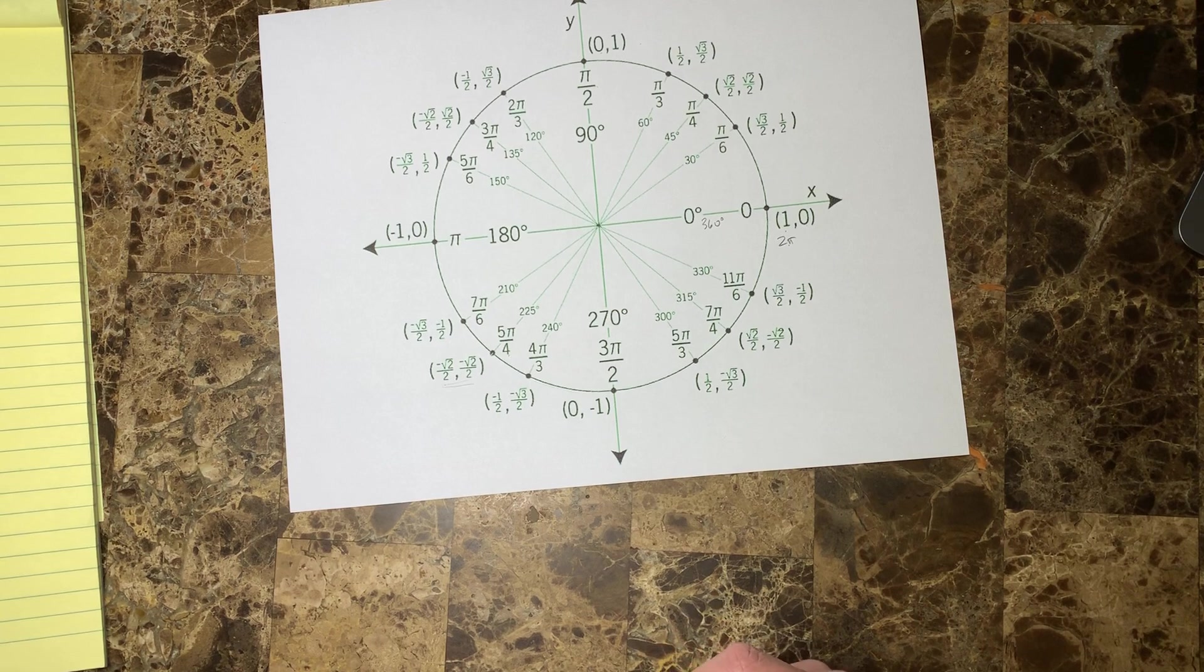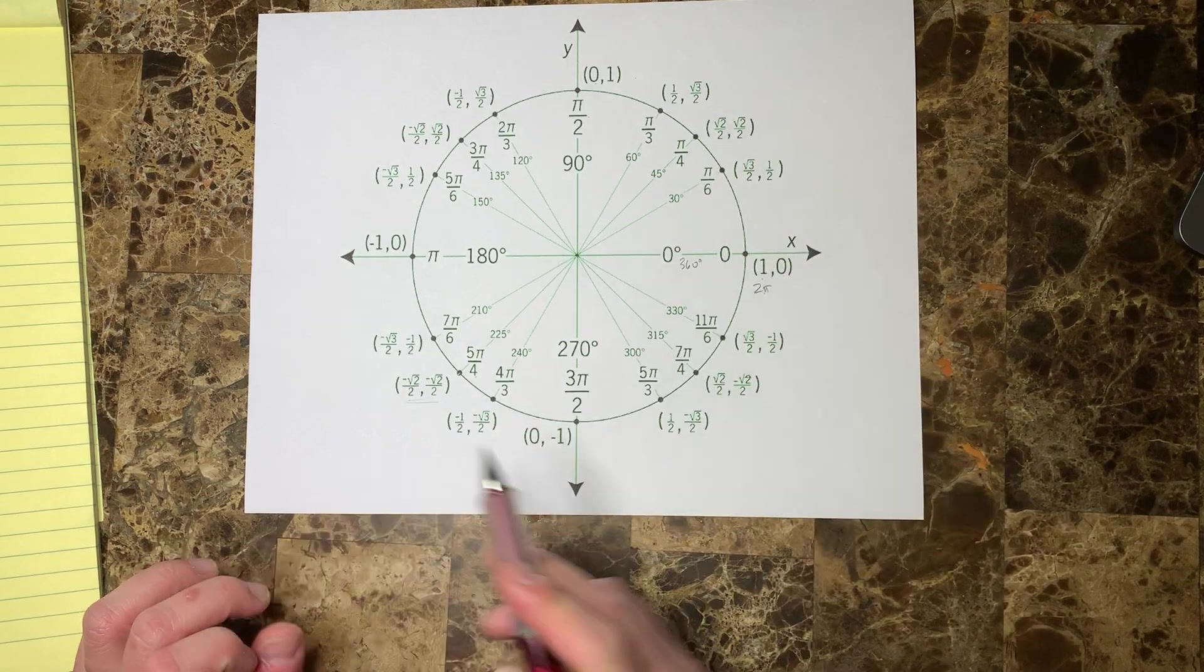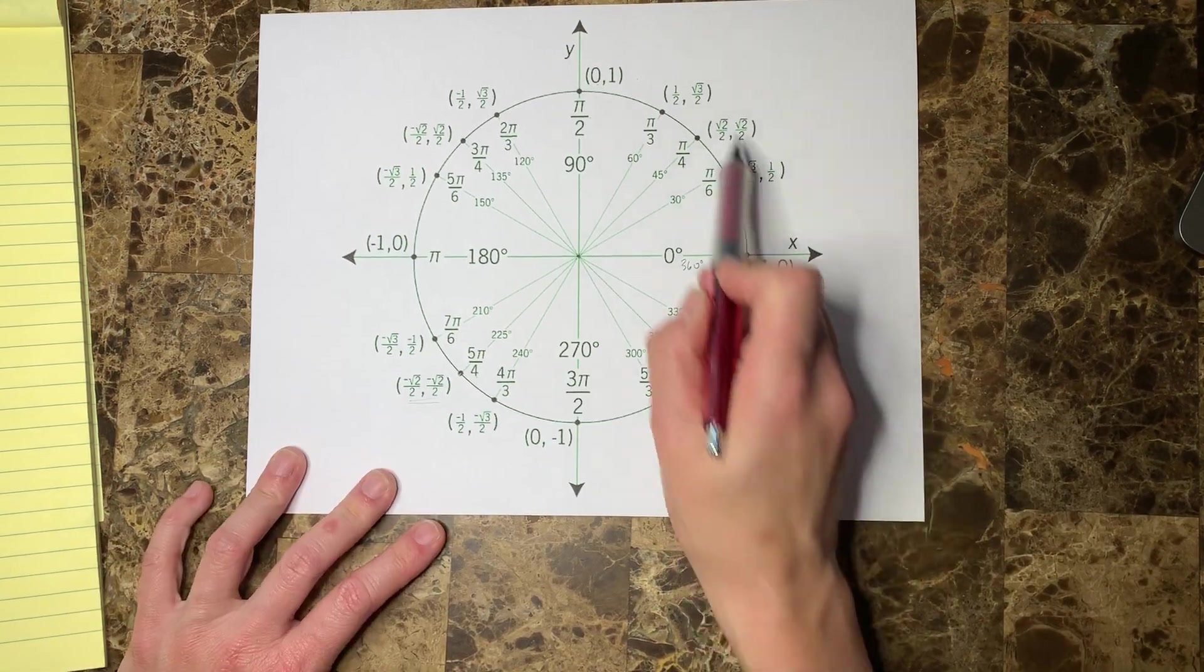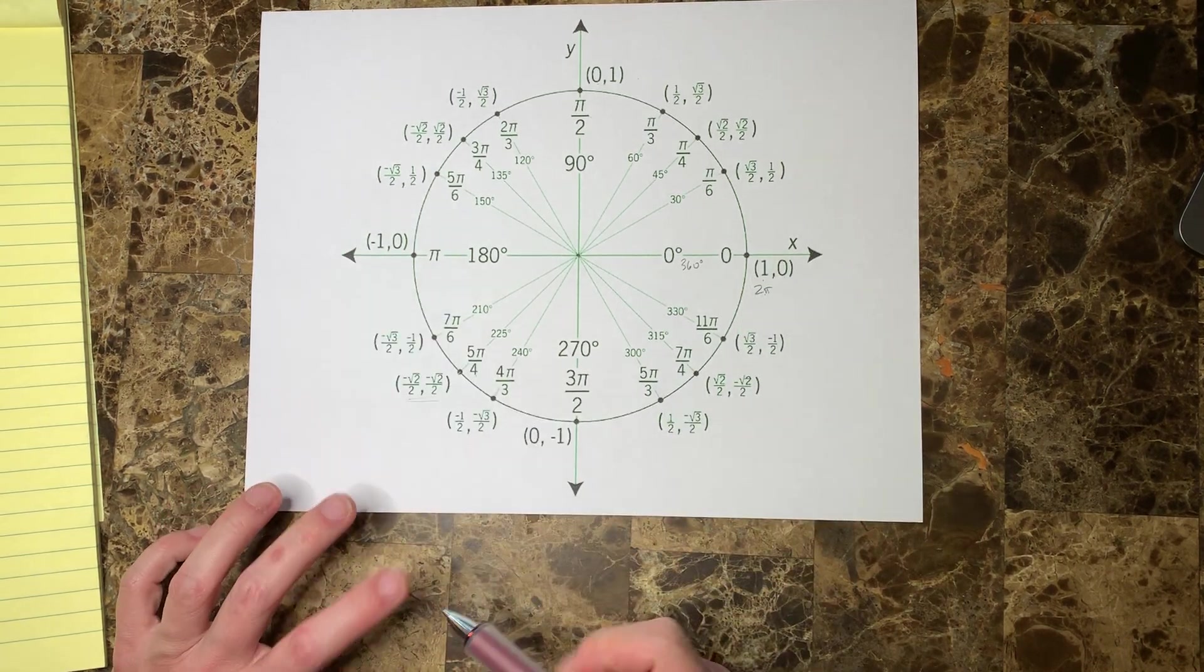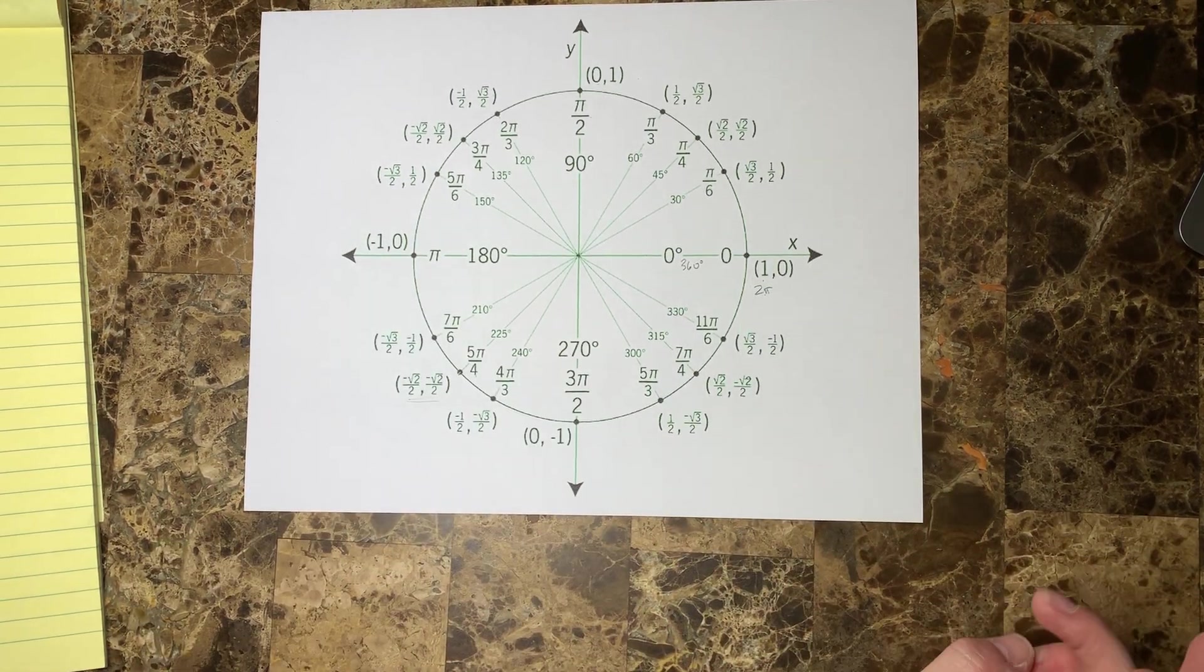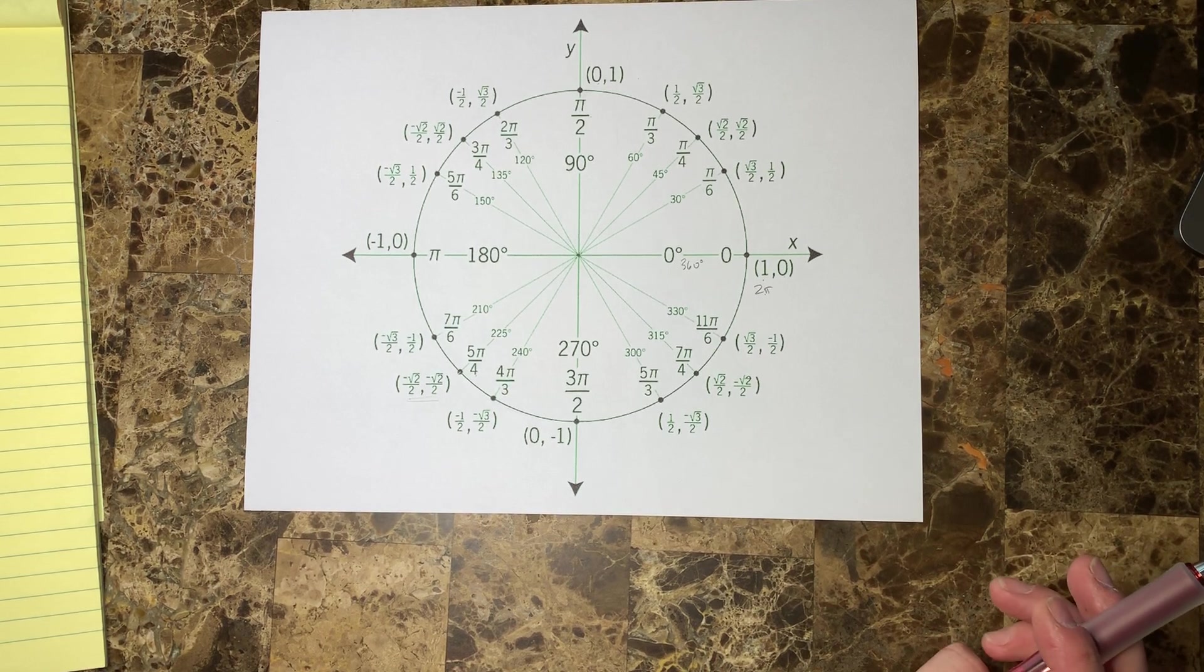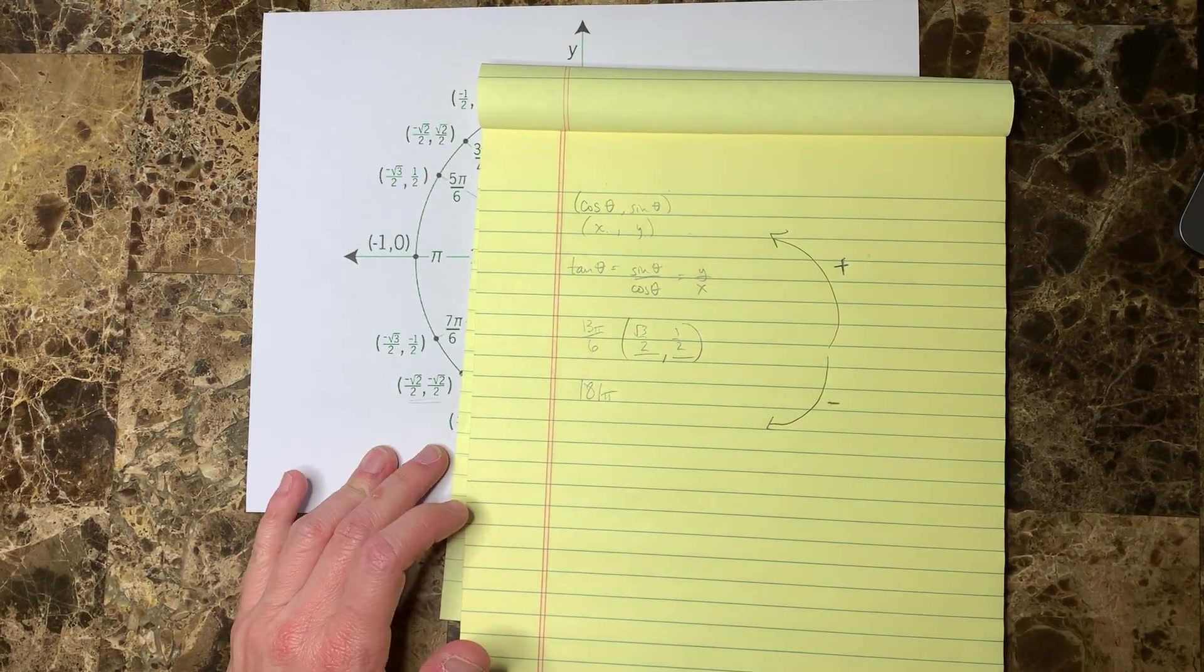So it's possible to go around more than once. In fact, you can go around an infinite number of times in both the positive direction and in the negative direction. Here's a great question: what do you think the ordered pair is for 181π?